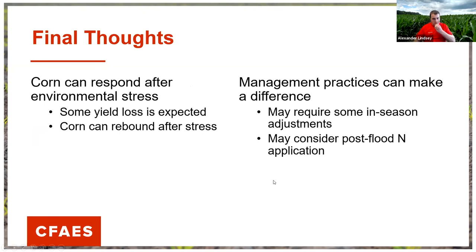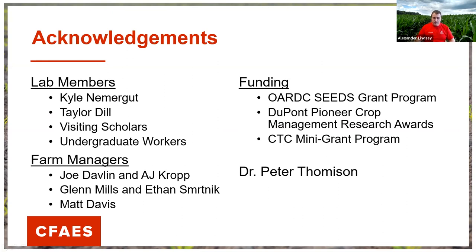In summary, corn can respond after environmental stress and we can expect some yield loss, but it's not necessarily complete devastation in many cases — corn can often rebound after a stress event. Management practices can make a difference and may require in-season adjustments, especially regarding flooding and nitrogen management, where a post-flood nitrogen application may be needed. We may also need to reconsider seeding rates if root lodging is a concern. Thanks to all the lab mates, funding sources, Dr. Peter Thomason, and the Ohio Seed Improvement Association for the invitation to present at Seed School this year.